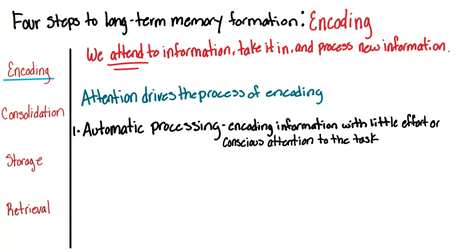Remember at the beginning of the lesson, when we asked if you remembered what you had for breakfast? This is an example of automatic processing. So although you may have encoded what you had for breakfast this morning, by the evening you may have forgotten it because it took little effort or conscious attention to the task.